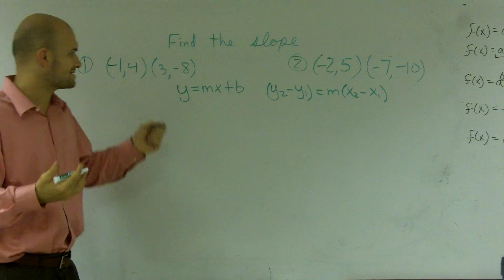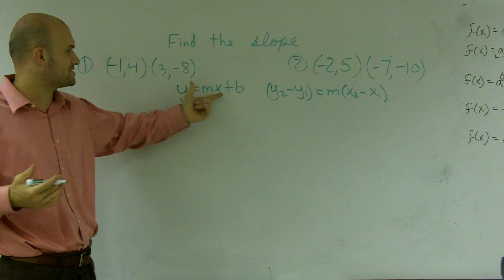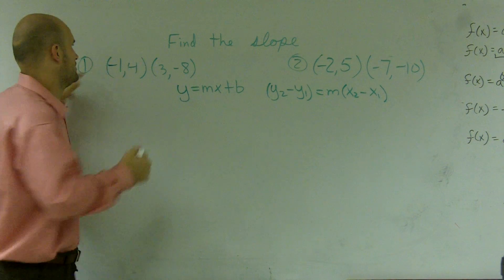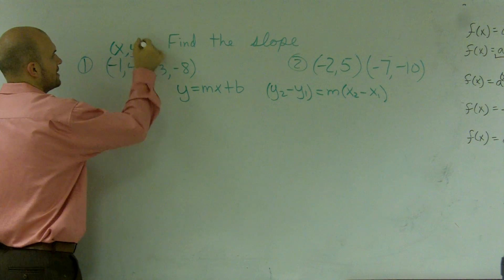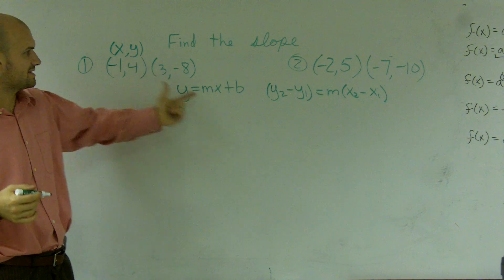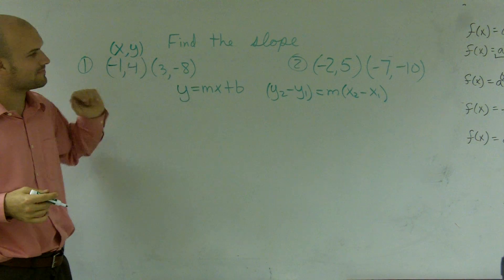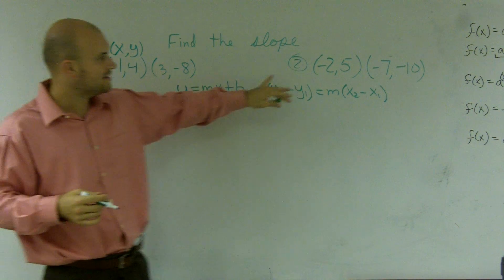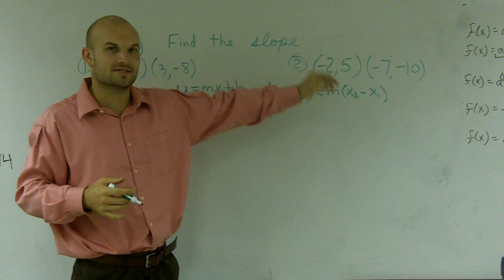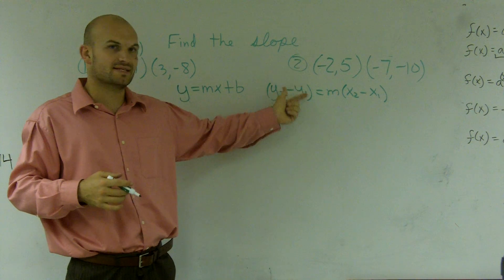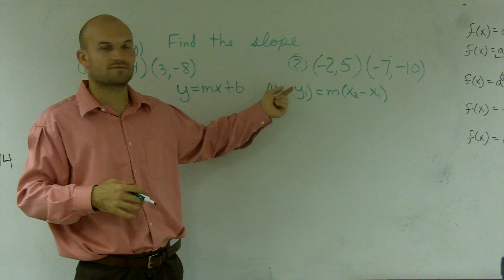Now, when given two points, it's going to be kind of difficult to plug into this equation because a point has an x and a y coordinate. So it's going to be kind of difficult — we have an x and y, but what do we do with the other point? Well, this becomes very helpful because we have two x's and two y's, and we distinguish these x's and y's with a subscript of 2 and 1.